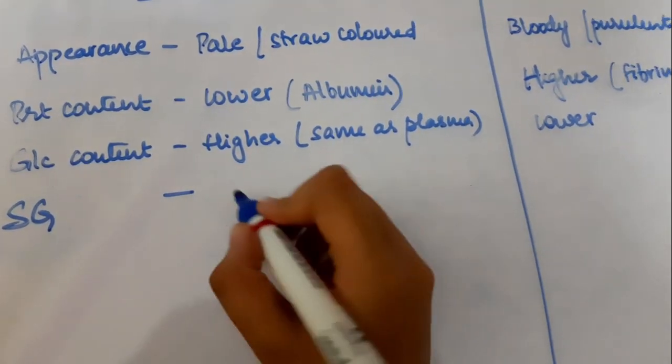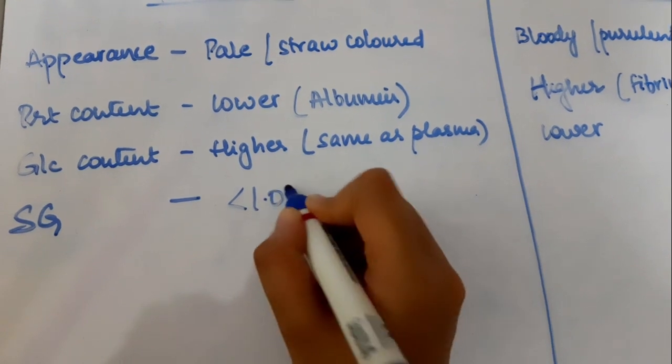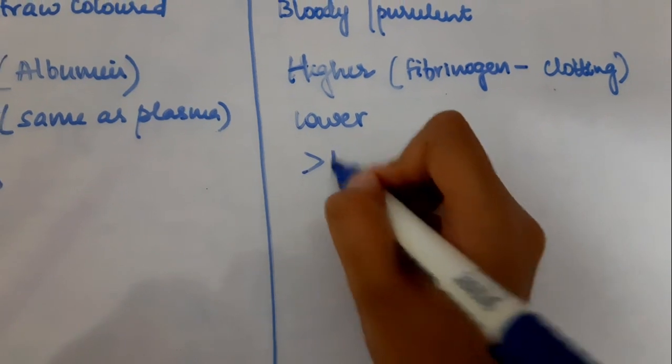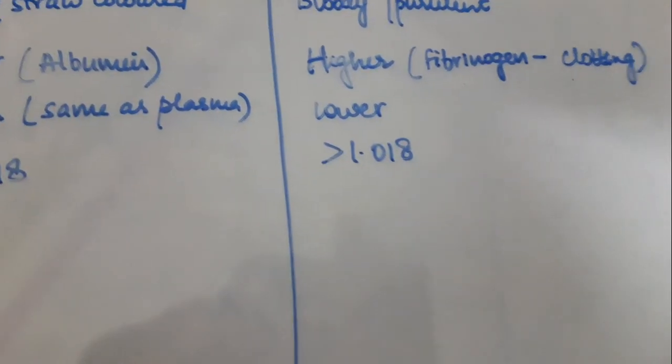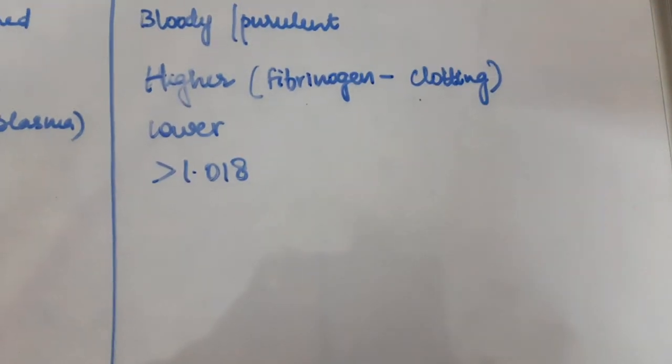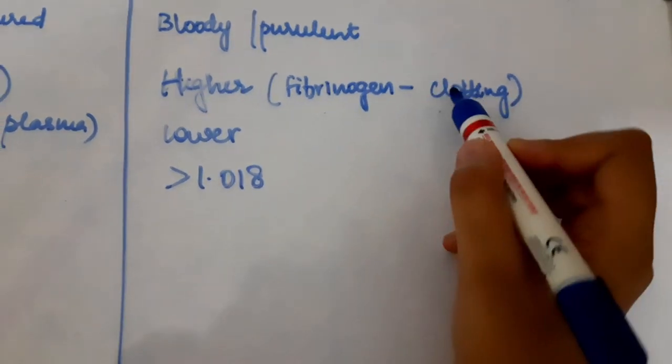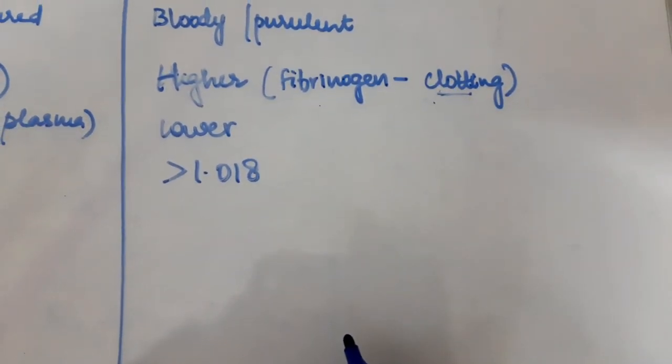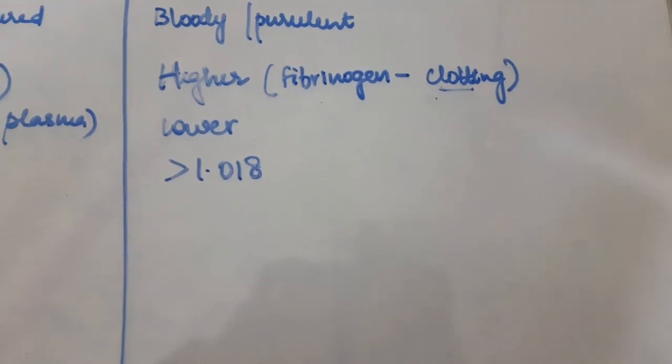Specific gravity of transudates is lesser. It will be less than 1.018 whereas specific gravity of exudates is higher which means it is a thicker fluid. You can also remember this by the fact that exudates have a higher protein content because of which they clot easily. So this makes them thicker.